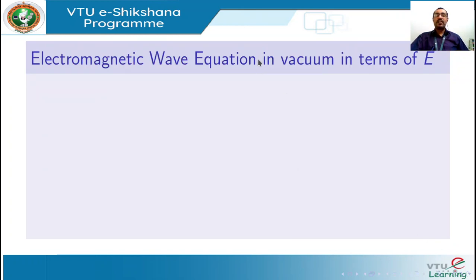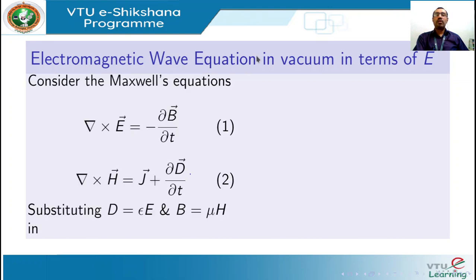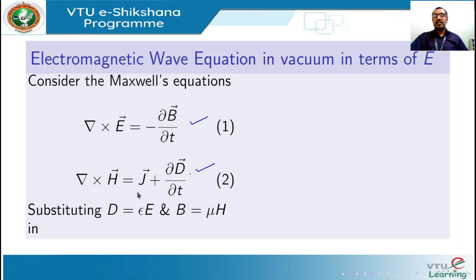The next topic is the wave equation for electromagnetic waves in vacuum in terms of electric field, which is a very important derivation. To start with, we consider two of Maxwell's equations: the first is Faraday's law of electromagnetic induction, which relates time varying electric and magnetic fields; and the second is the Maxwell-Ampere law, which relates the curl of the magnetic field with the current density — curl of H equals current density plus displacement current density.